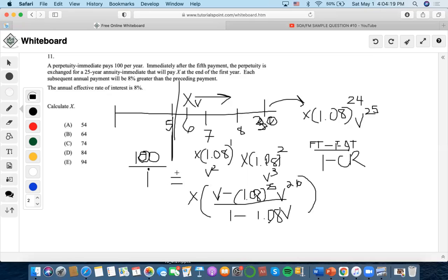So now we have to find X. Well, it says that the annual effective interest is at 8%. So we're going to have to plug that one in. So we're going to do 100 divided by 0.08, and we find out that the answer is 1250.